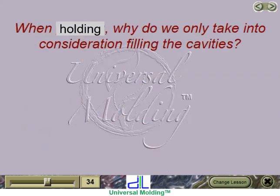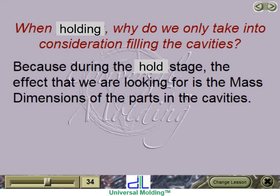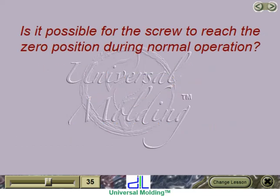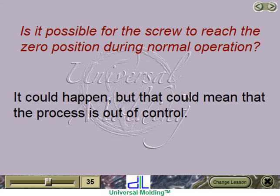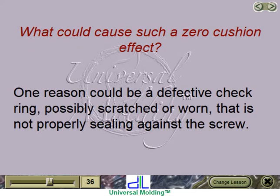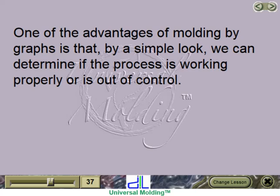When packing, why do we only take into consideration filling the cavities? Because during the pack stage, the effect we are looking for is the mass dimensions of the parts and the cavities — we are molding parts, not runners. Is it possible for the screw to reach the zero position during normal operation? It could happen, but that could mean the process is out of control. What could cause such a zero cushion effect? One reason could be a defective check ring, possibly scratched or worn, that is not properly sealing against the screw. One of the advantages of molding by graphs is that, by a simple look, we can determine if the process is working properly or is out of control.